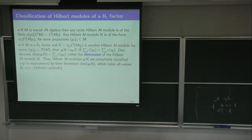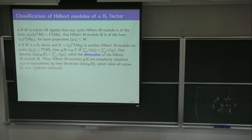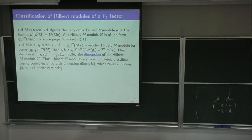If you take another family Qⱼ with Pᵢ equivalent to Qᵢ in M, that gives you an equivalent M-module. More than that: if you have another Hilbert M-module given by projections Qⱼ over another index set J, these two modules will be equivalent if and only if the sum of the traces on one side equals the sum of the traces on the other side.